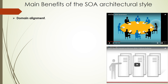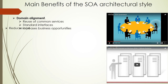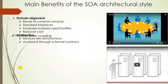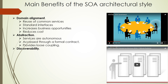The main benefits of the SOA architectural style are: first, domain alignment — reuse of common services with standard interfaces increases business and technology opportunities while reducing cost. Next is abstraction — services are autonomous and accessed through a formal contract, providing loose coupling. Next is discoverability — services can expose descriptions that allow other applications and services to locate them.